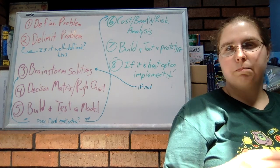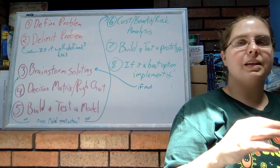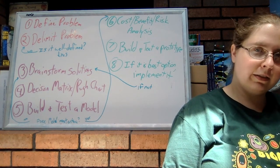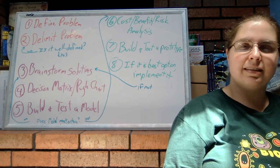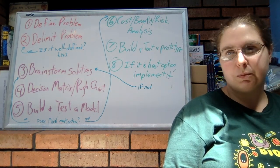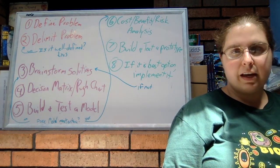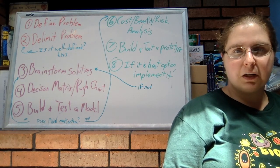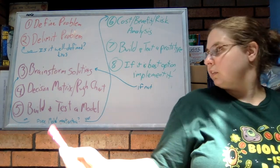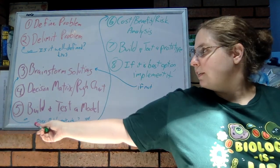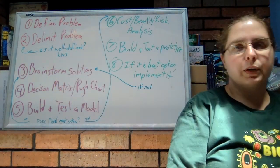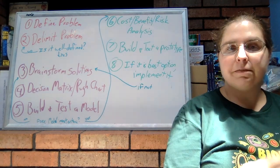Once we have completed the Pugh chart and we found maybe one or two that seemed to be the best possible ideas, we will build and test a model of our possible solutions. If the model meets the criteria and it seems to work, then we'll move on. If it doesn't, we'll go back and brainstorm new ideas.